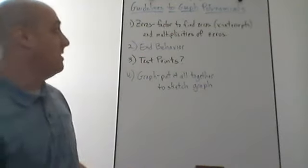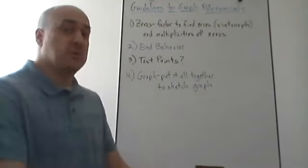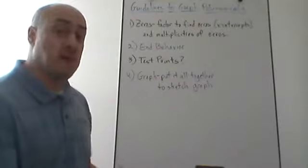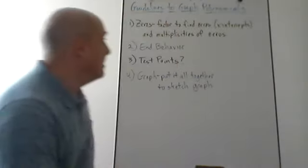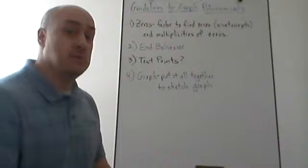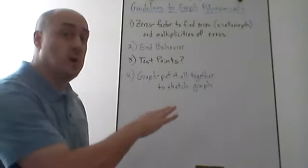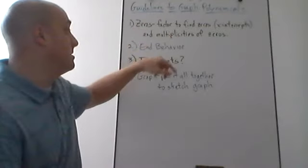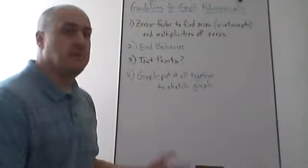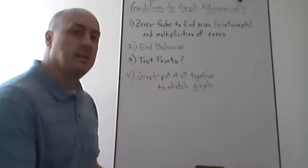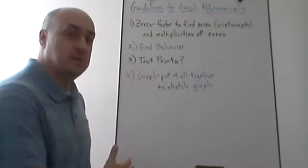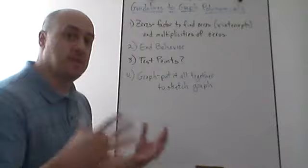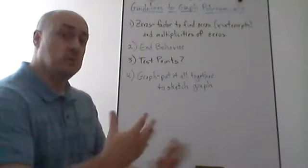In this video we're going to talk about some guidelines for graphing polynomial functions and do one or two examples. Before we get into the guidelines, if you haven't watched the other videos I've done about polynomials, you should watch those first, because I explain zeros, multiplicities, end behavior, and all that. We're going to tie it all together and use it to draw the graph of a polynomial.